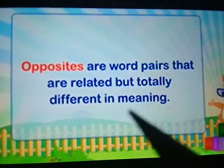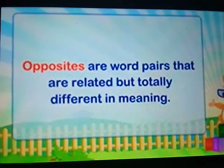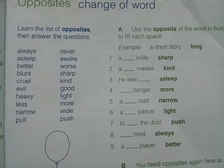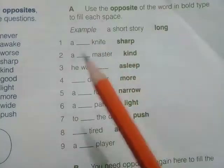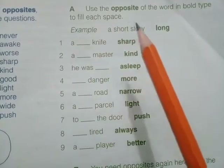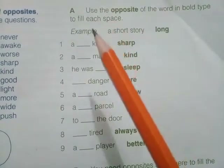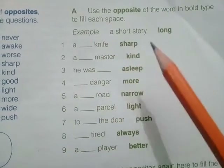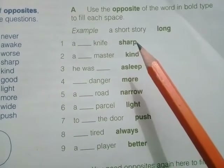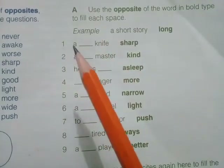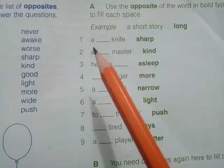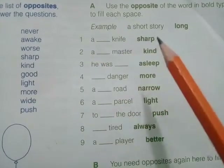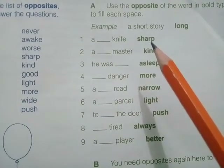Opposites are word pairs that are related but totally different in meanings. Now let's start our exercise. Exercise A: use the opposite of the word in bold type to fill each space. We have to write the opposites of these bold type words. The first word is: 'a dash knife' — we have a word 'sharp.'